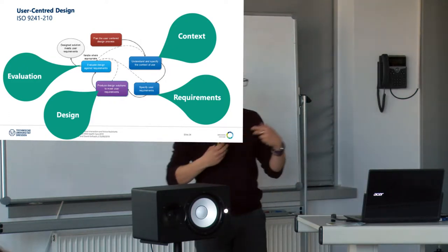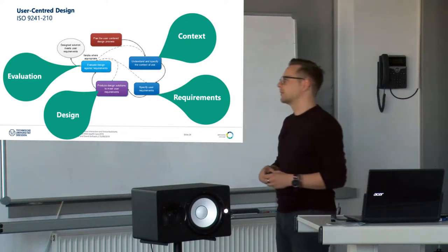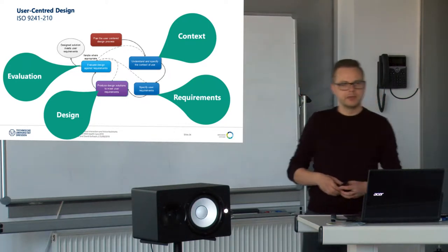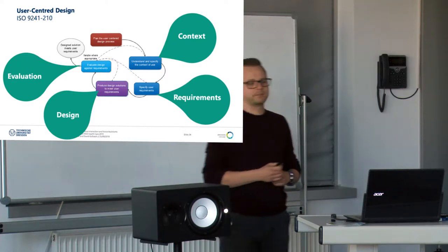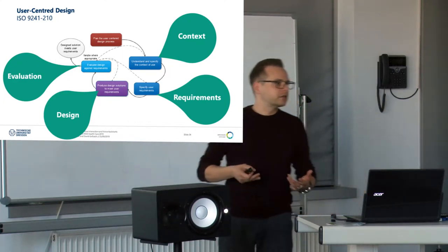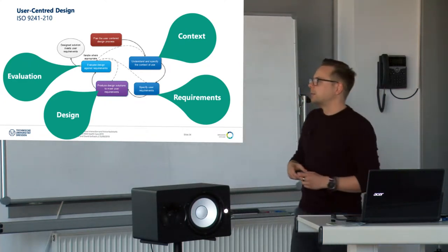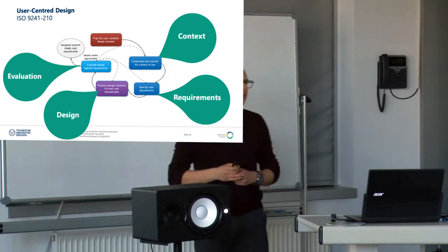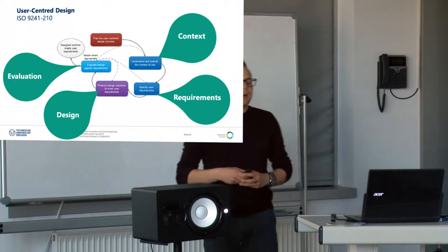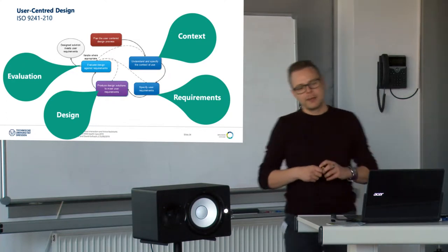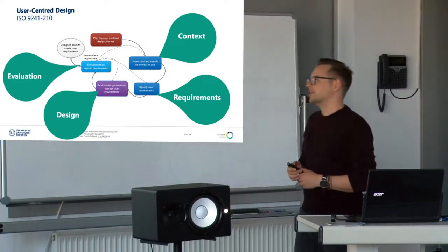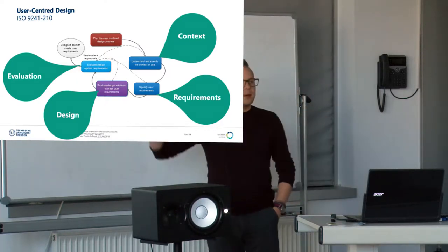We get to know who is going to be using the assistant or the user interface that we are designing. In the next step, we have to find out the requirements that our system has to fulfill — we get to know the users in more detail. In the third phase, we are in the design and implementation phase, where we create the design, the user interface, maybe at first a prototype that we then, in the fourth step, evaluate. We check if our requirements are matched using specific evaluation techniques. If the evaluation process shows not all requirements are met, then we have to start again — it's an iterative process.